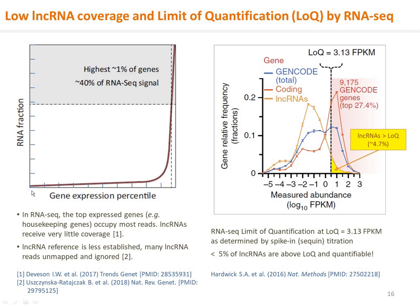In an RNA sequencing run, the top 1% of expressed genes, such as housekeeping genes, occupy about 40% of all sequencing reads. lncRNAs at lower expression levels in the gene expression percentile receive very few read counts and are poorly covered. RNA sequencing reads also rely on being mappable to the reference transcriptome to be counted. For well-established protein-coding genes this is not a problem, but for less-established lncRNA references, many lncRNAs are simply unmapped and not accounted for.